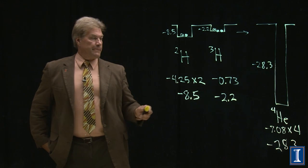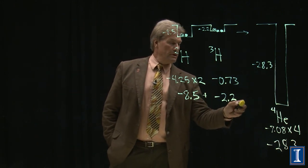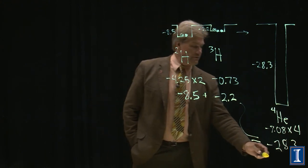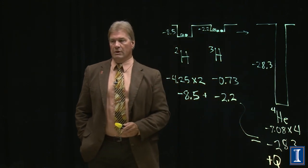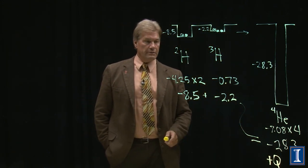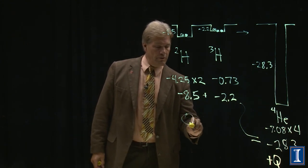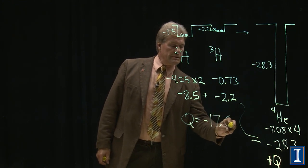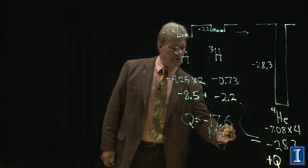Take these numbers. We've got minus 8.5 plus minus 2.2 is equal to minus 28.3 plus energy released, plus the Q. The energy that comes out. Do this, and we're going to get that Q is equal to minus 17.6 mega electron volts.